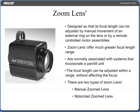The focal length can be adjusted within a range, for example 6 to 48 millimeters, without affecting the focus. There are two types of zoom lenses: manual zoom lens and motorized zoom lens.